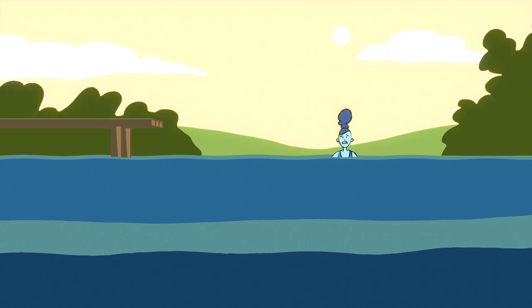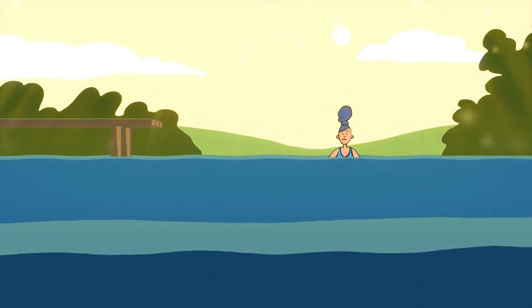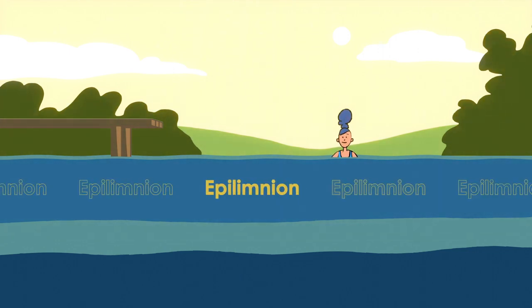Throughout the warmer months of the year, the sun warms the surface water in the lake and creates a warm layer on top. In Lake Burragarang, the lake behind Warragamba Dam, this layer can be up to 15 to 20 metres deep and is called the epilimnion.